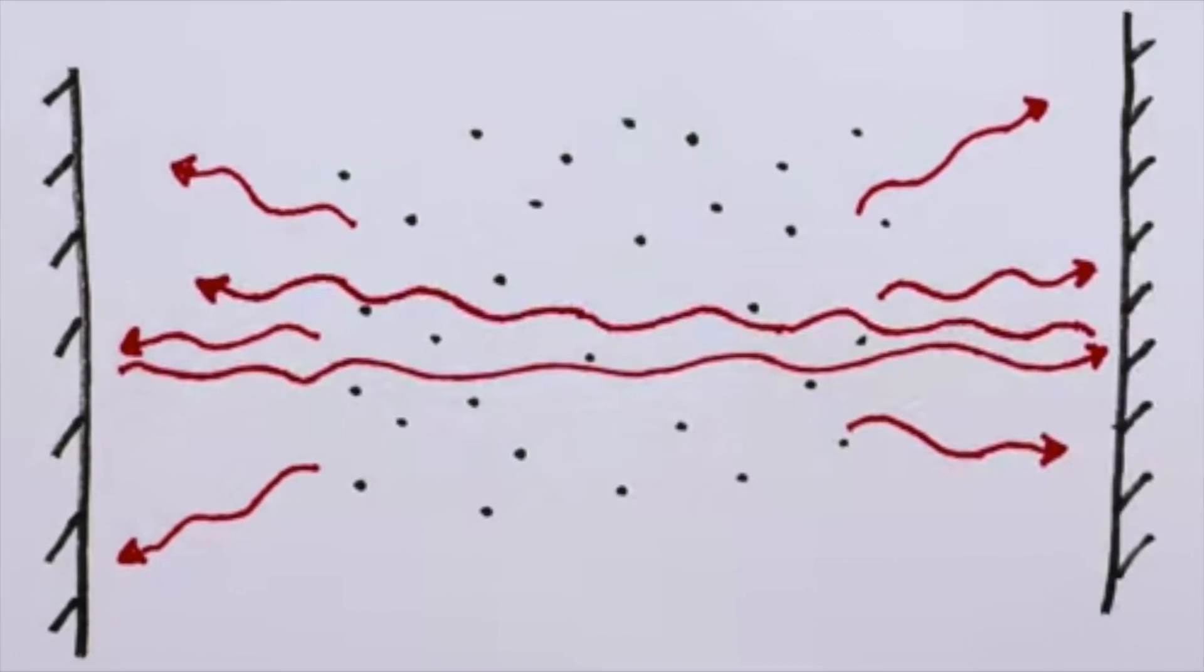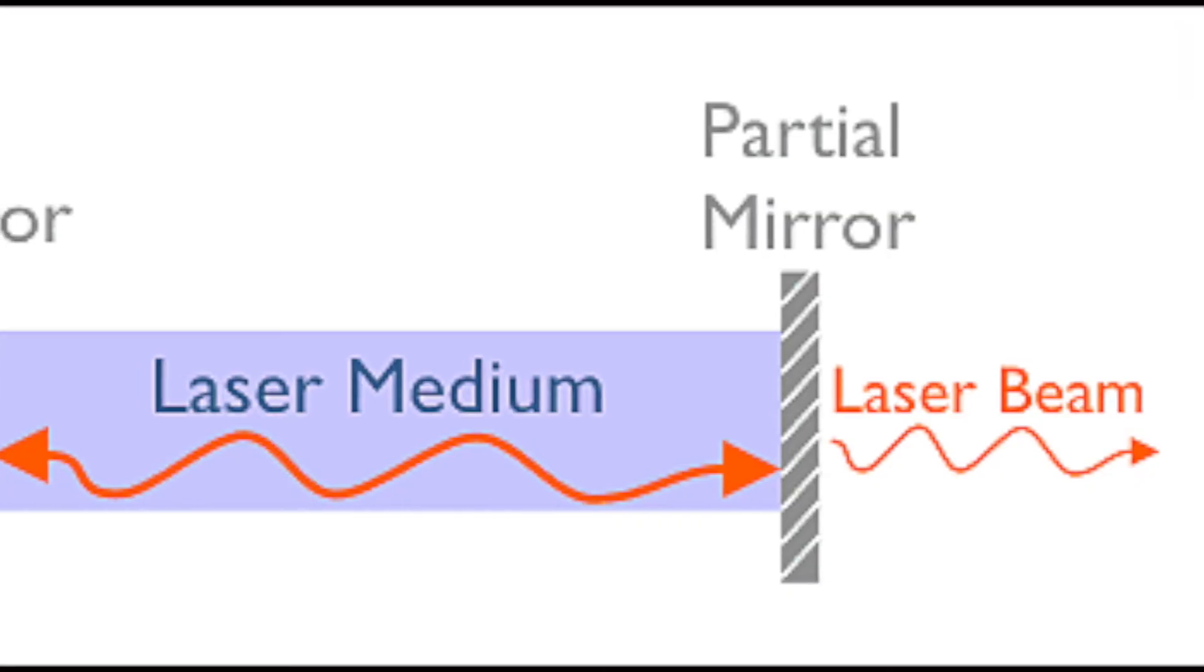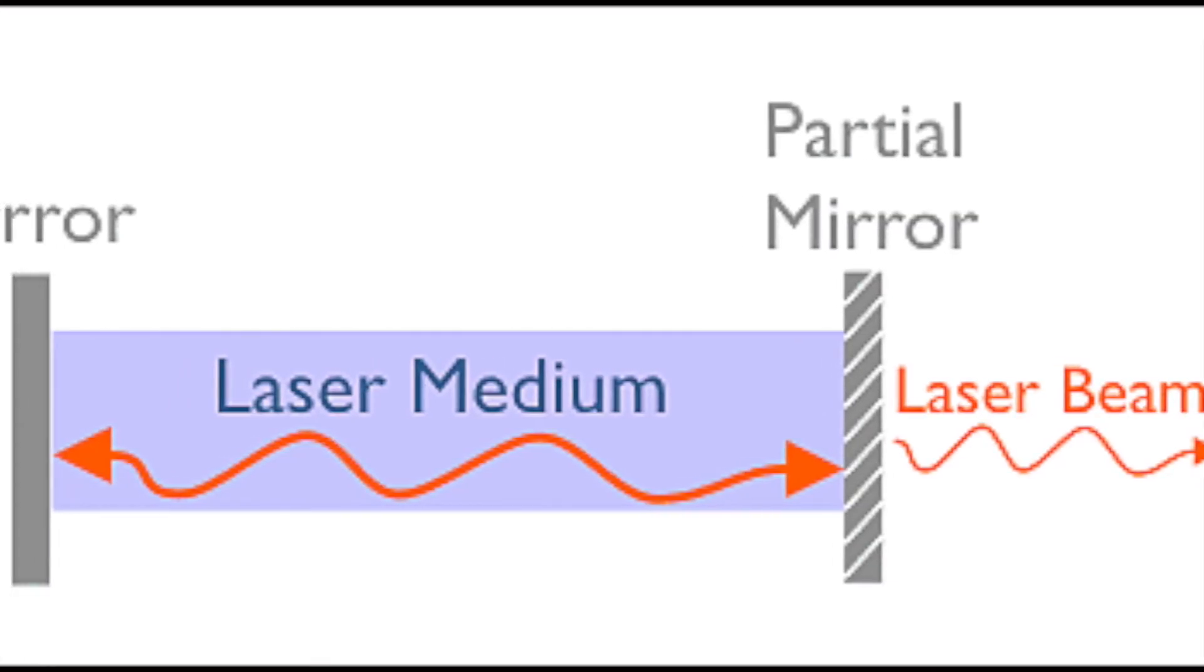Since one of the mirrors does not have a reflectivity of 100%, some of the photons will pass through and create a laser.